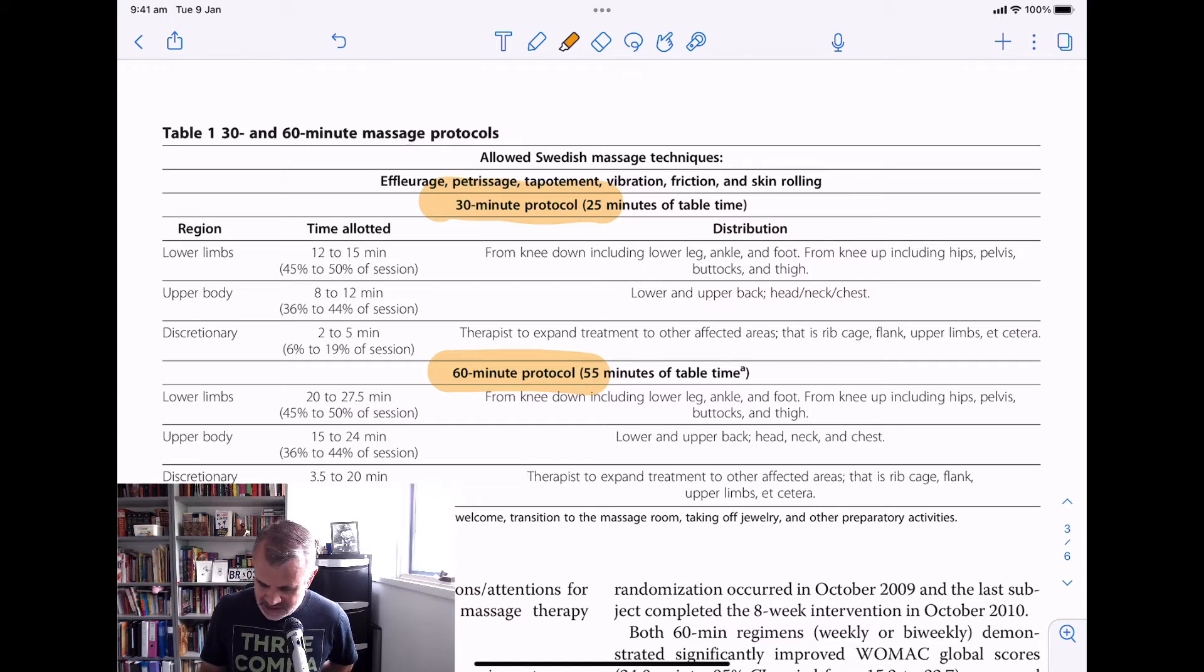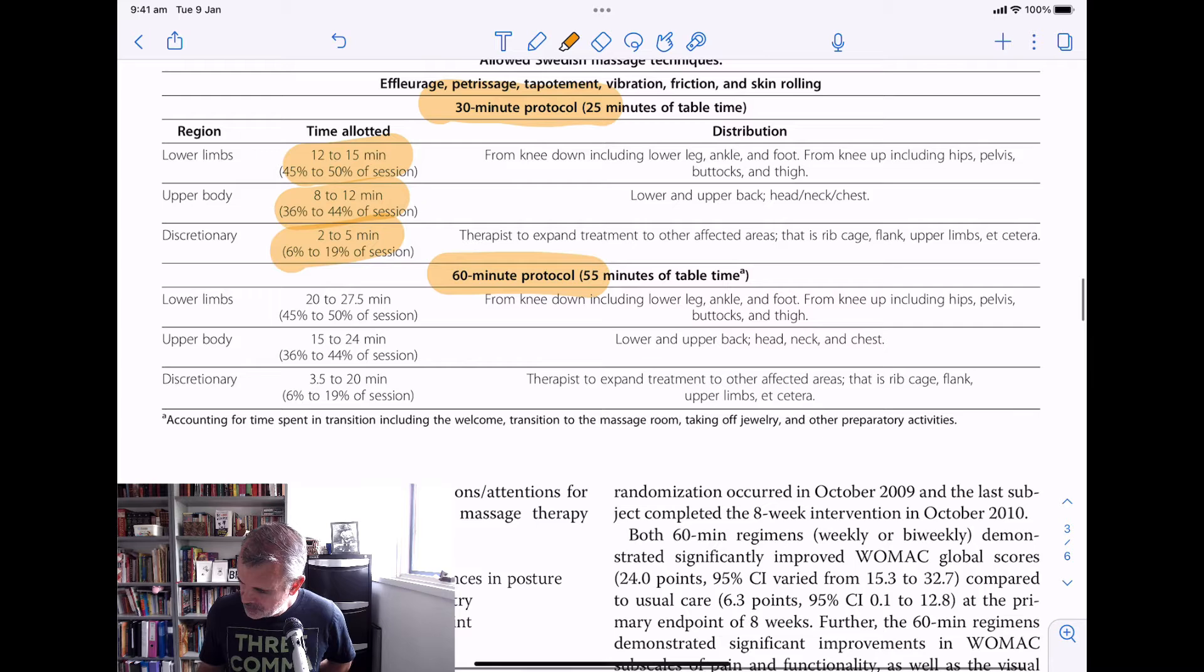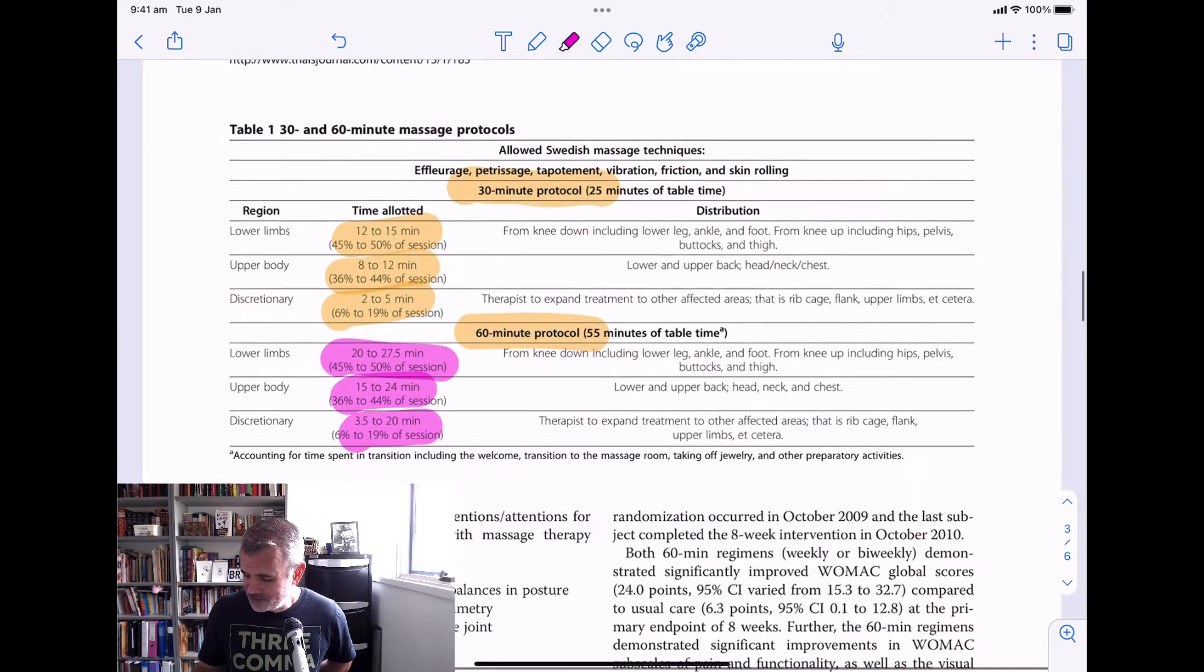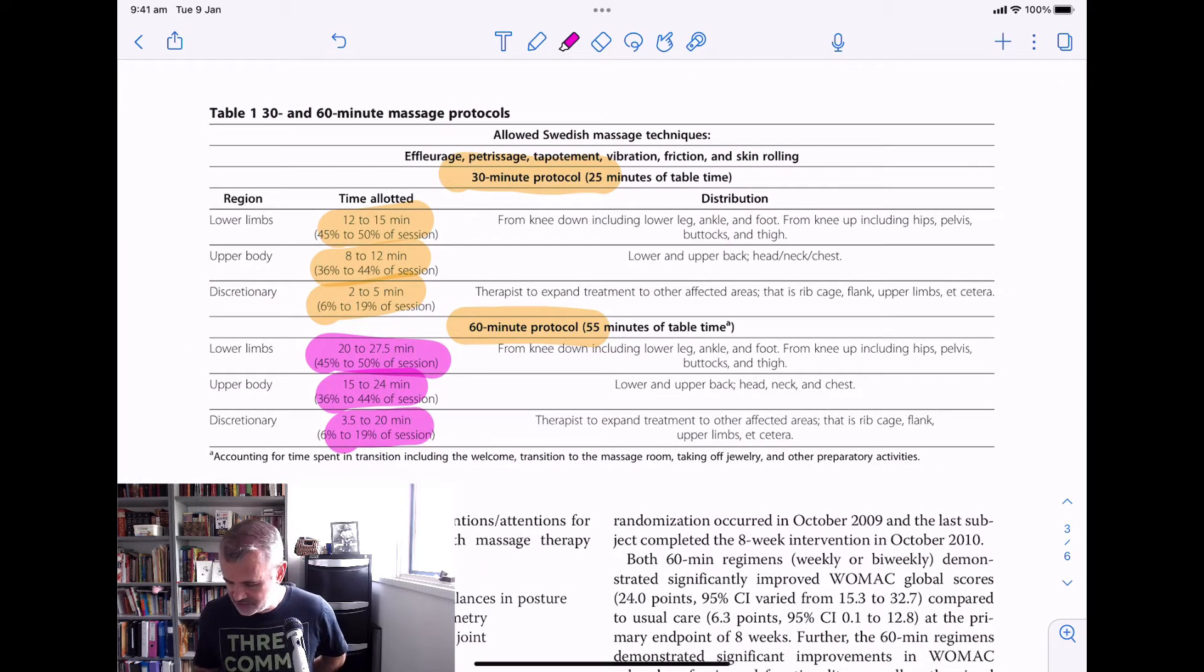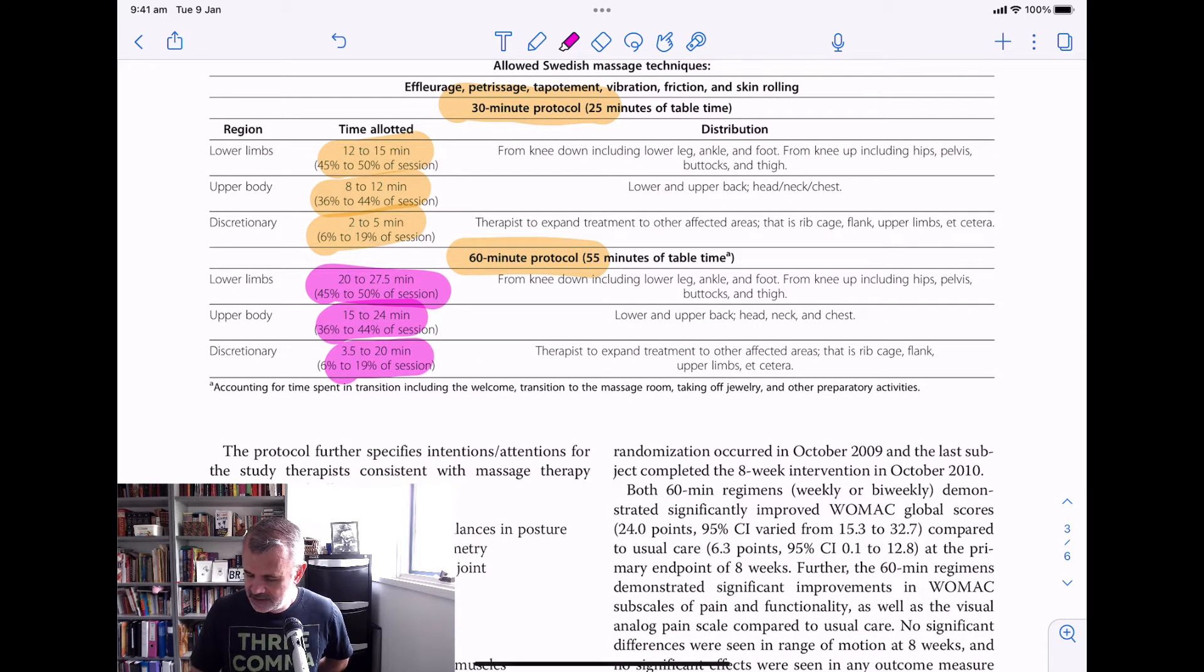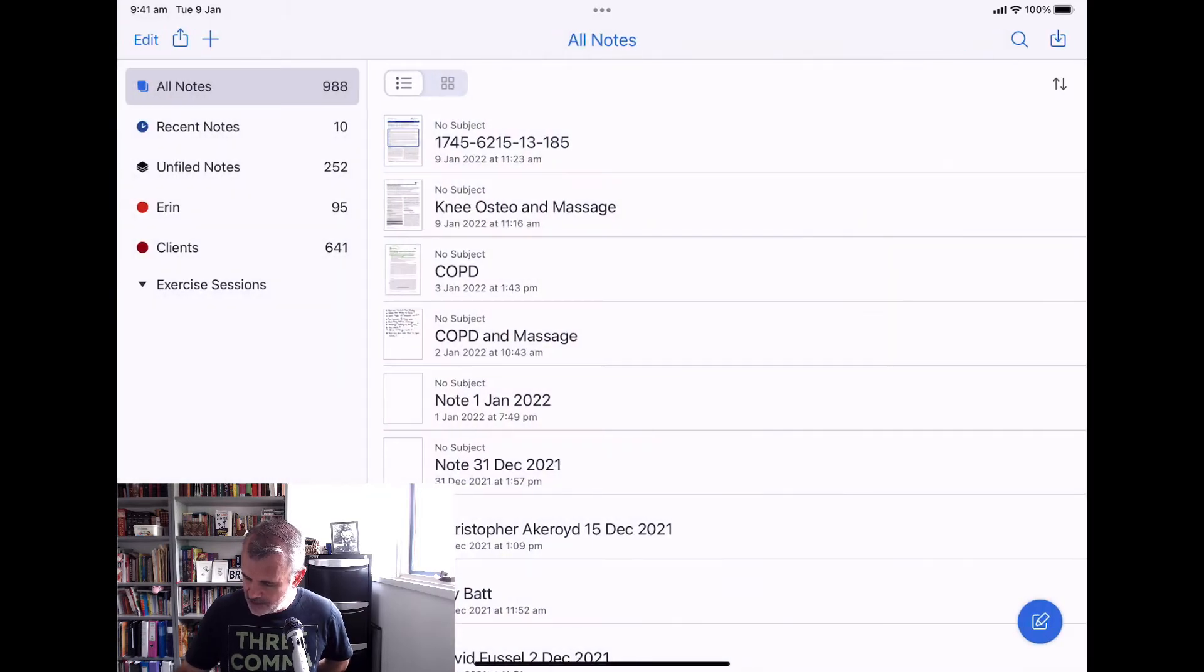So they had specified allocated times to different parts of the body. So for the 30 minutes, they had 12-15 minutes on the lower limbs, upper limbs, upper body, sorry, 8-12 minutes, and then whatever you want for 2-5 minutes after that. So on the lower limbs for the 60-minute, they had 20-27 minutes on the lower limbs, upper body 15-24 minutes, and 3.5-20 minutes are discretionary. So any other things you want to do. So that's not really a protocol, is it? When you think of the difference between 3 minutes to 20 minutes and working on a different part of the body, so different therapists doing that all around the country. So that was their massage protocol.